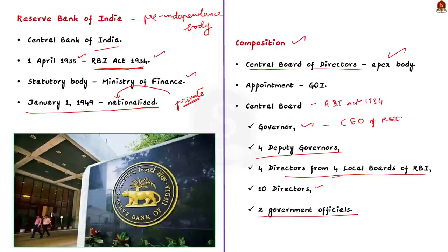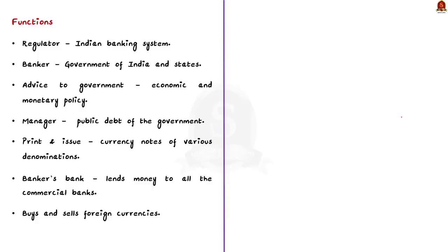Now we will see the important functions of the RBI one by one. Firstly, the RBI acts as a regulatory body and it regulates the Indian banking system. Secondly, the RBI acts as the banker to the government of India and states. It performs all the banking functions of the state and central government. The RBI also provides useful advice to the government on matters related to economic and monetary policy.